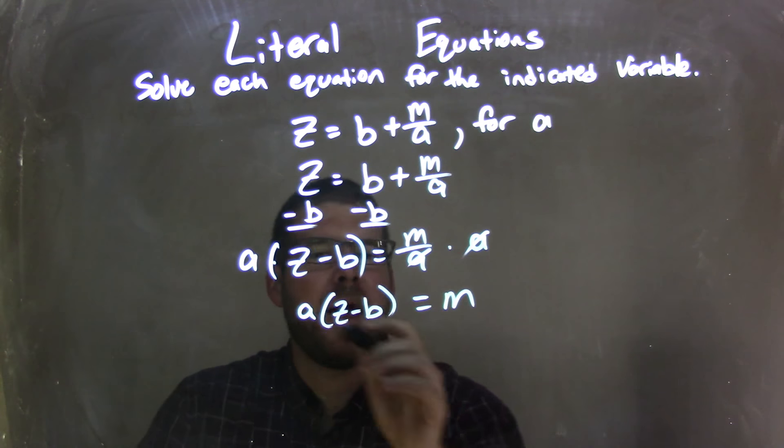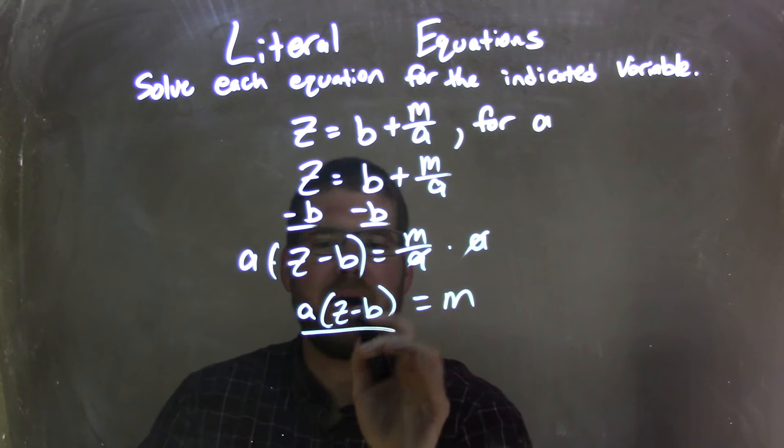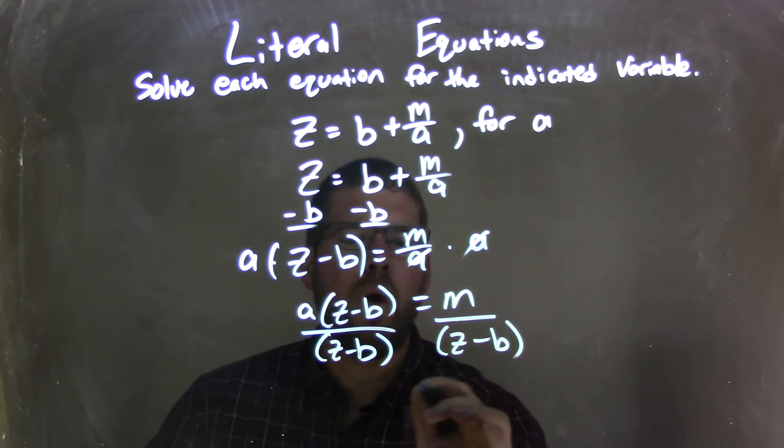Well, from there, I'm not distributing that a, that would be going backwards. What I'm going to do is actually divide by that whole fraction, z minus b. Why not? I can divide by the whole thing.